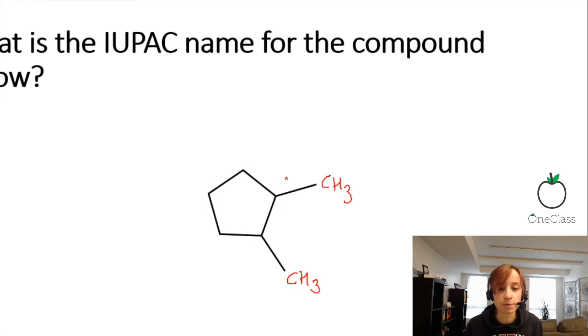When we are numbering, we want to have the longest carbon chain possible. As well, we want our functional groups, our substituents, the extra decorations on our longest linear chain to have the smallest numbers.